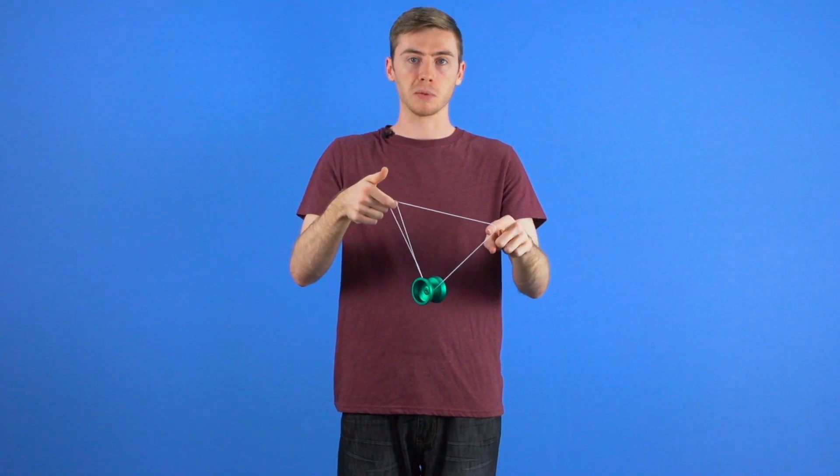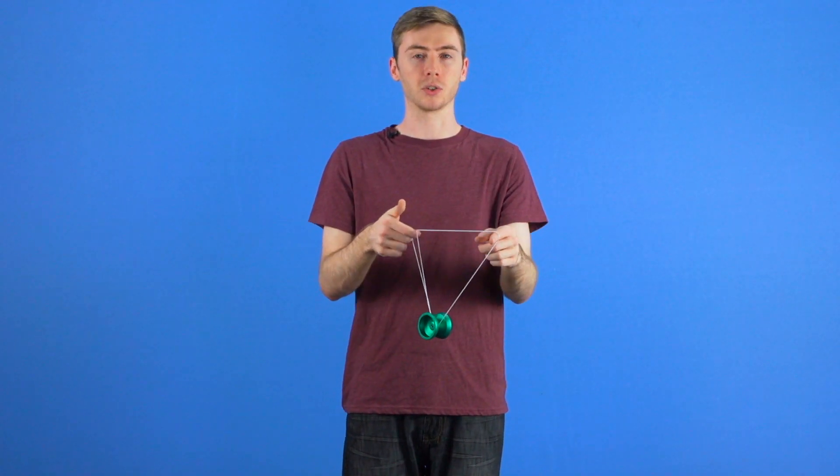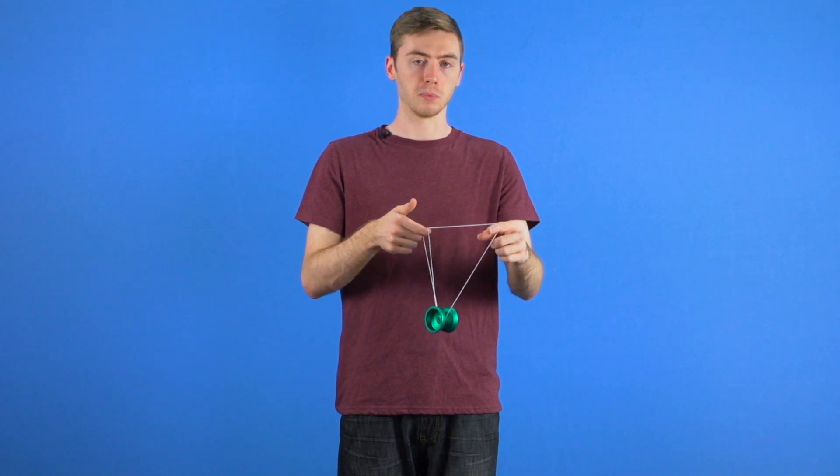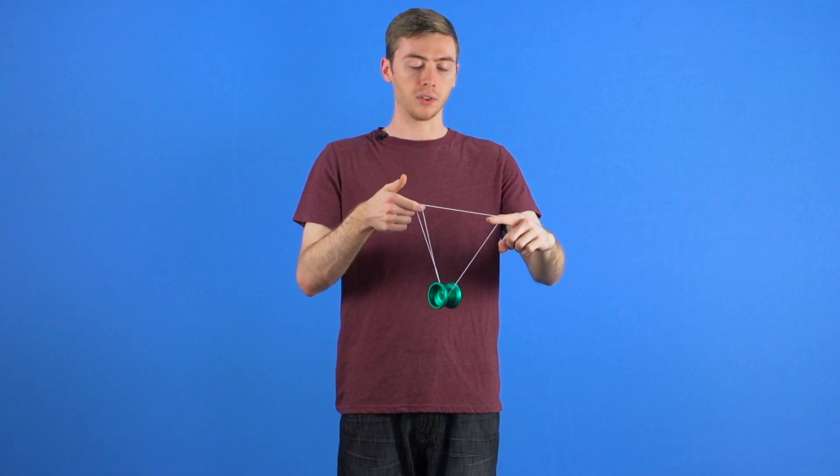You'll also notice you're no longer in split bottom mount and if I were to drop this, it's actually a green triangle and you might get a knot from this. So make sure not to drop it and get out of this mount before you do.